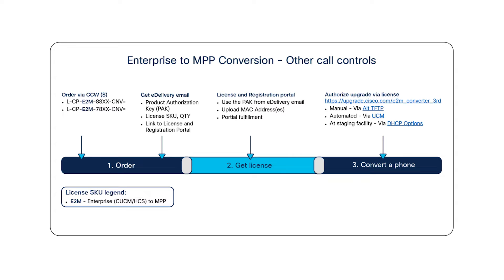After you order the license, you will get an email with instructions to associate the license with the MAC address of the phone. Each license must be bound to the MAC address of a specific phone. When that's complete, you will get an email with a file that contains the license file — it ends in .lic. Be sure to save the file.